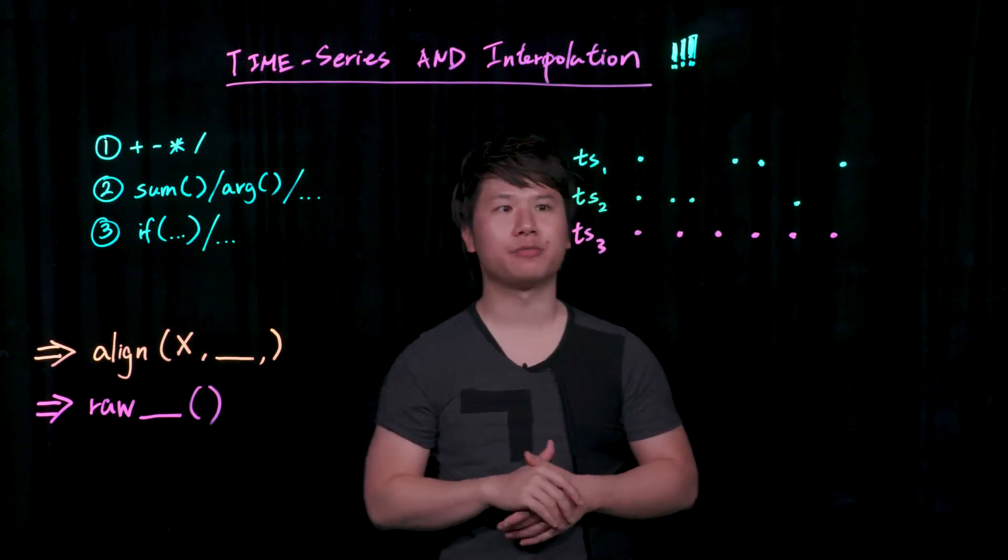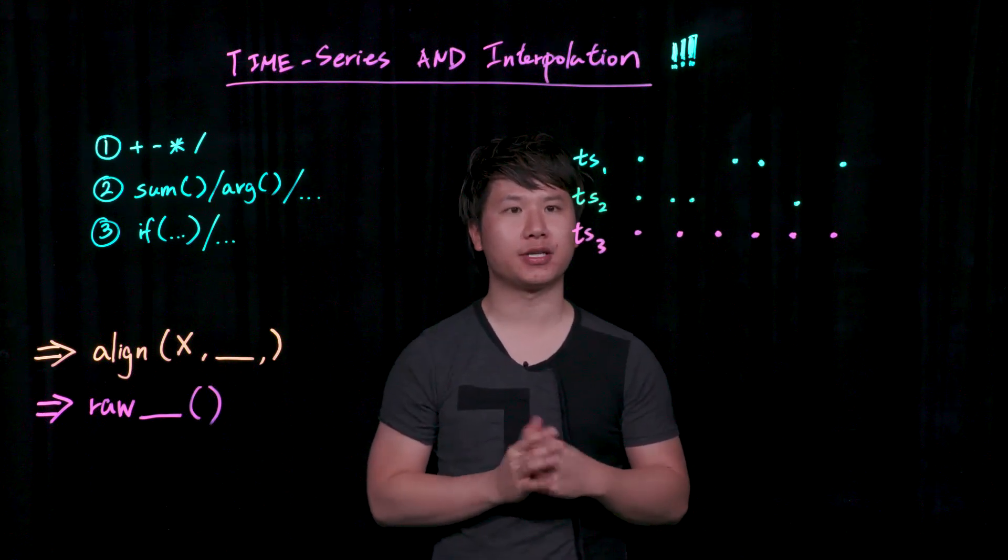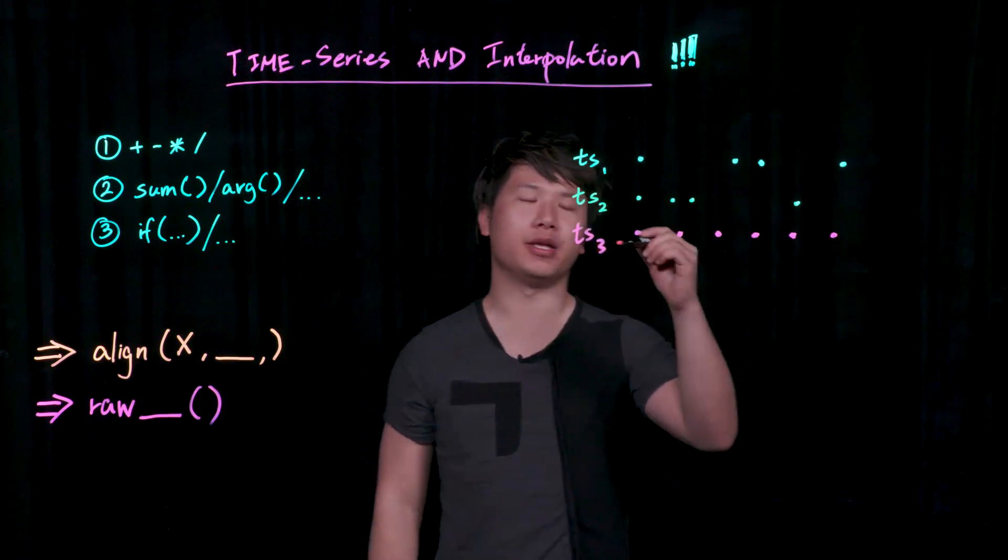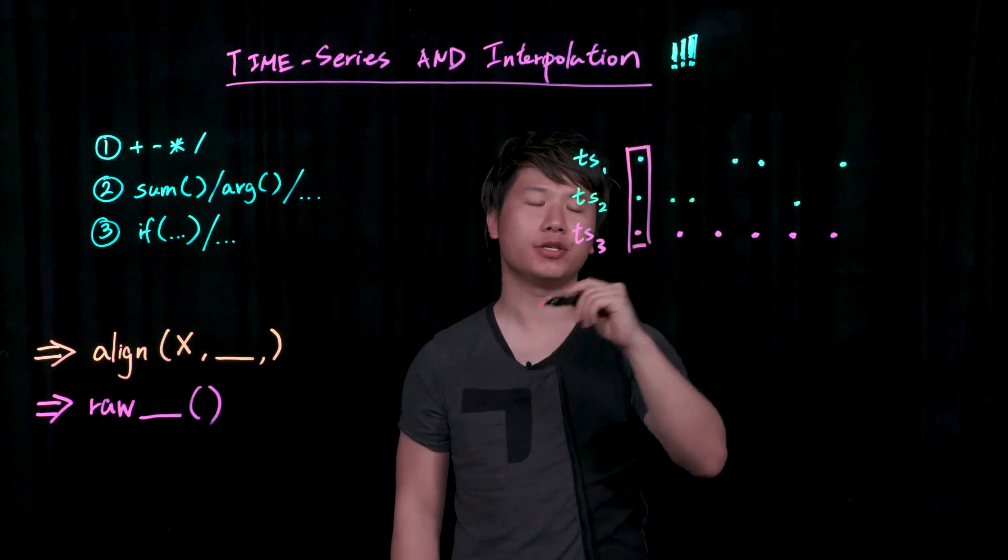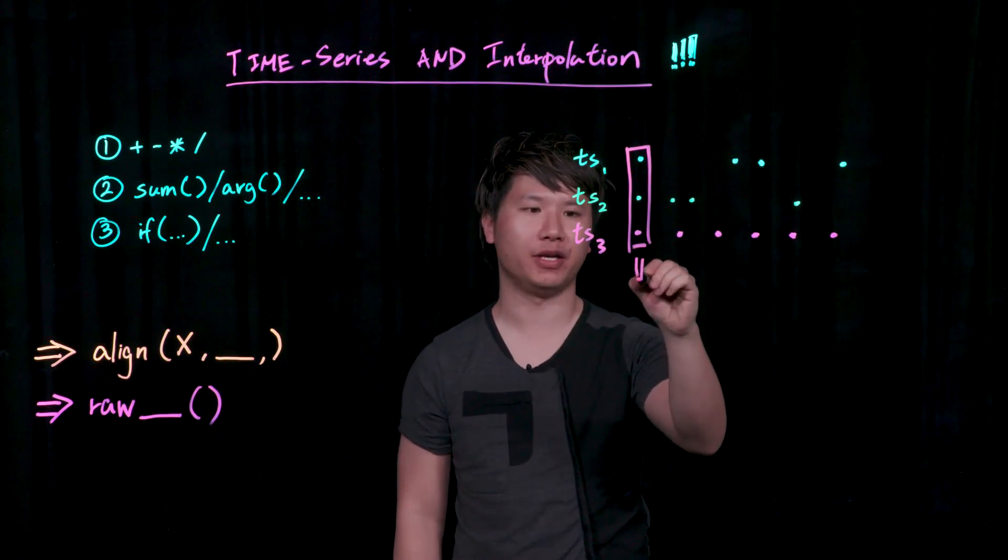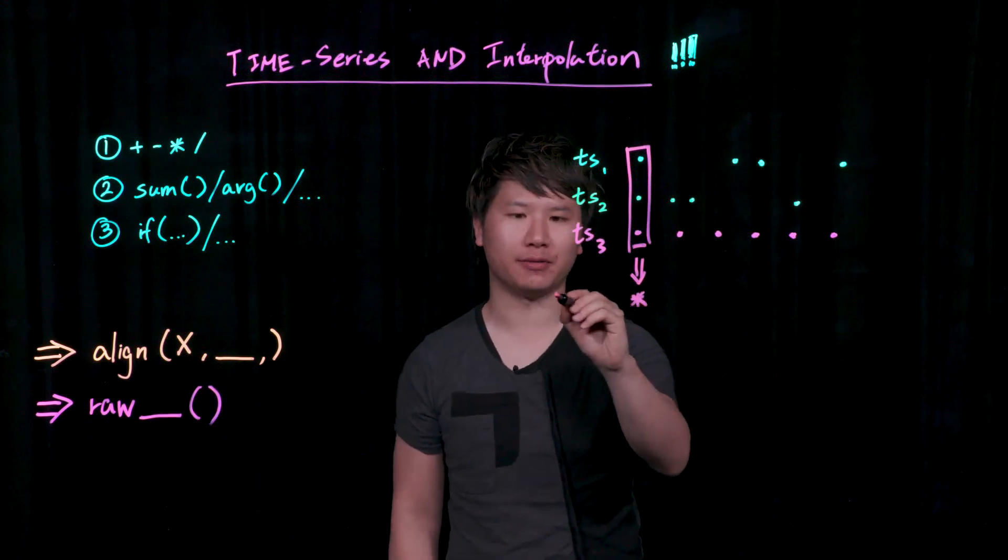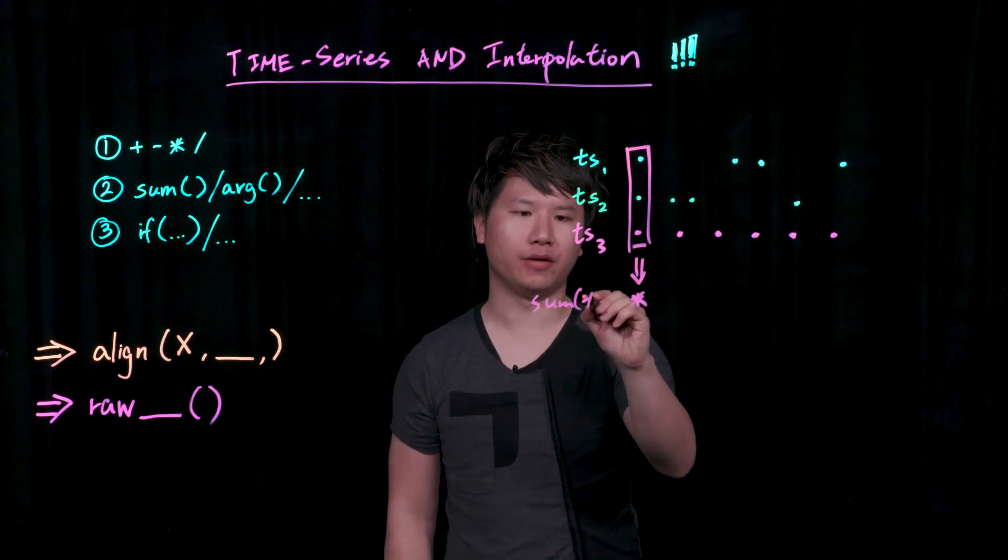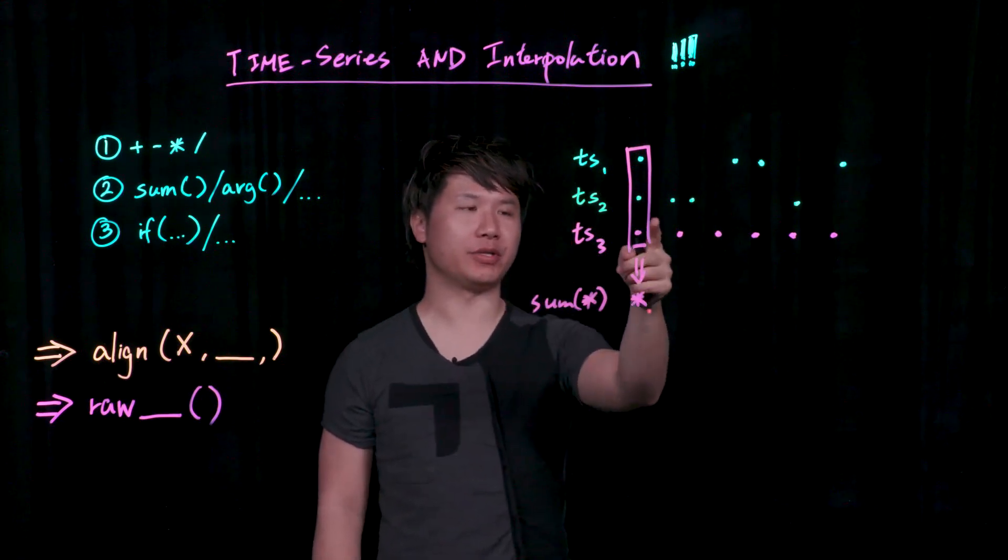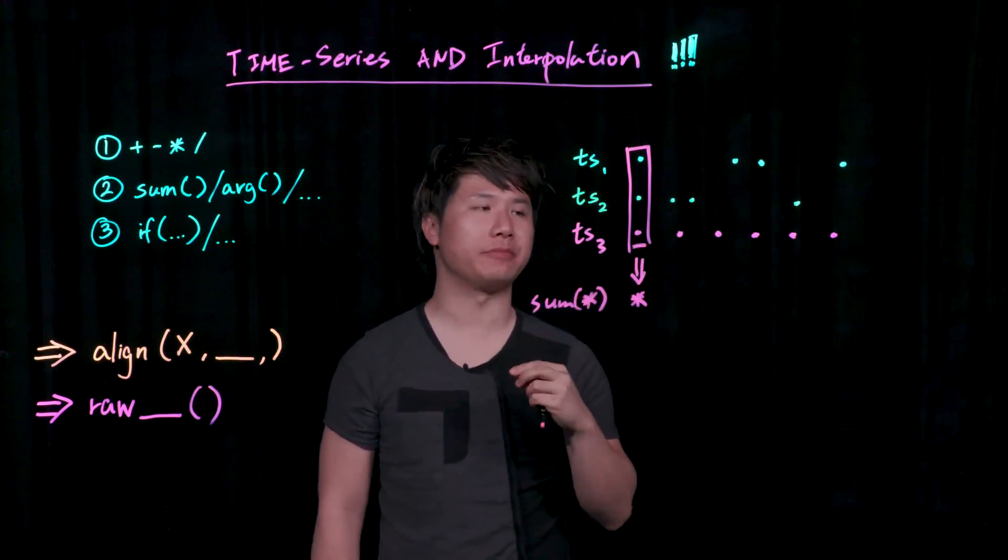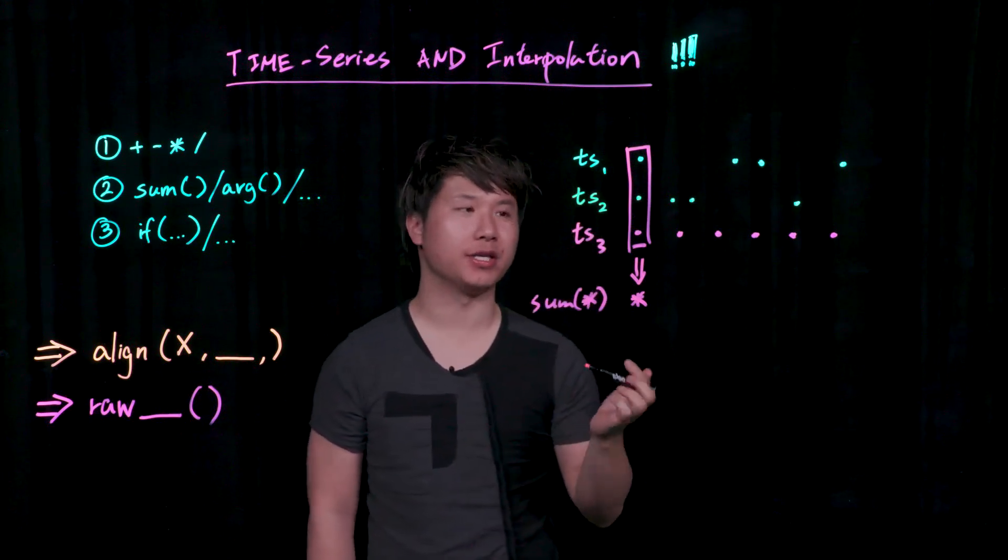But let's look at this particular example. So imagine you are going to sum these time series together. In the traditional sense, if they happen to align, obviously you have no problem, right? You could just very easily produce a new data point. Let's say you're doing a sum over all of the data. But the problem comes when you're in time series two, and the data actually becomes quite gappy. And with Wavefront, the default operation is to interpolate.